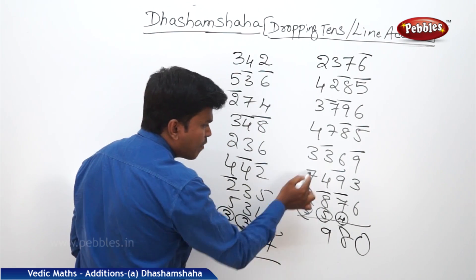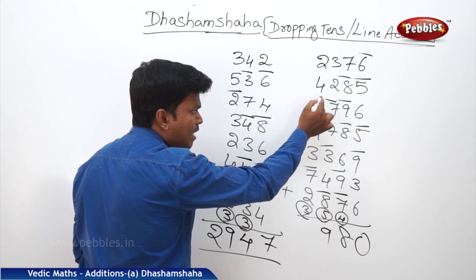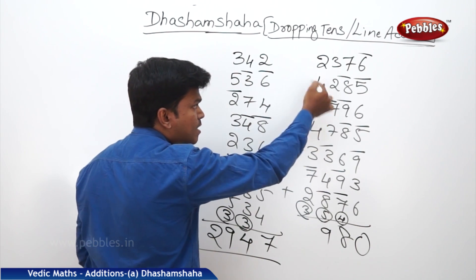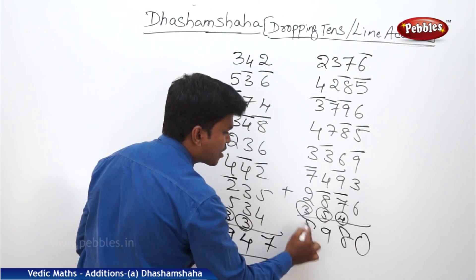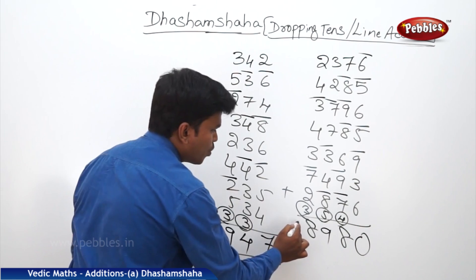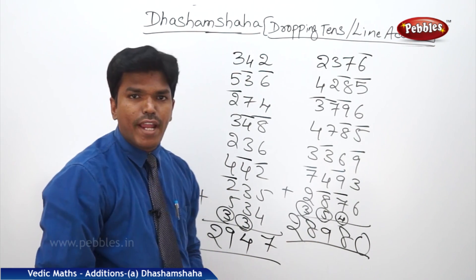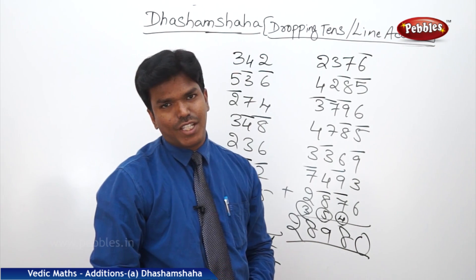Fourth line: 3, 2 → 5. 5, 7 → 2 (drop 10). 2, 3 → 5. 5, 4 → 9. 9, 3 → 2 (drop 10). 2, 4 → 6. 6, 2 → 8. How many 10s have we dropped? 2 tens. So what is our answer? 2, 8, 9, 8, 0.